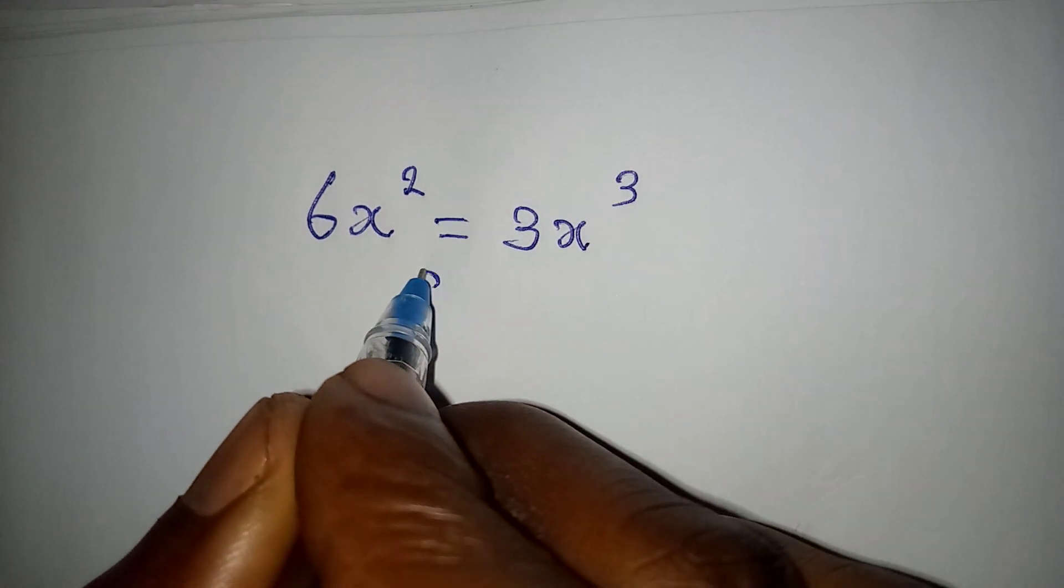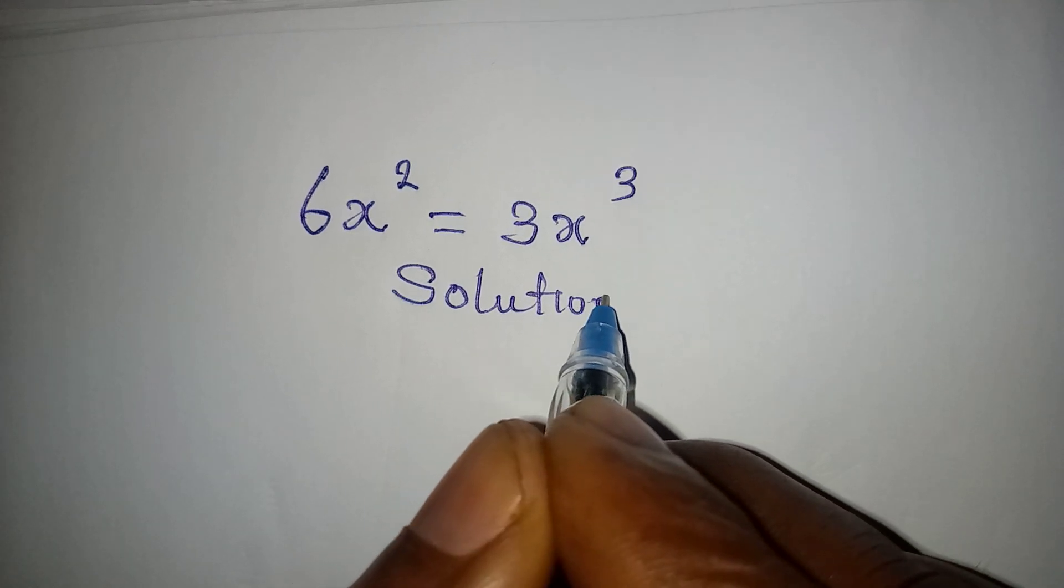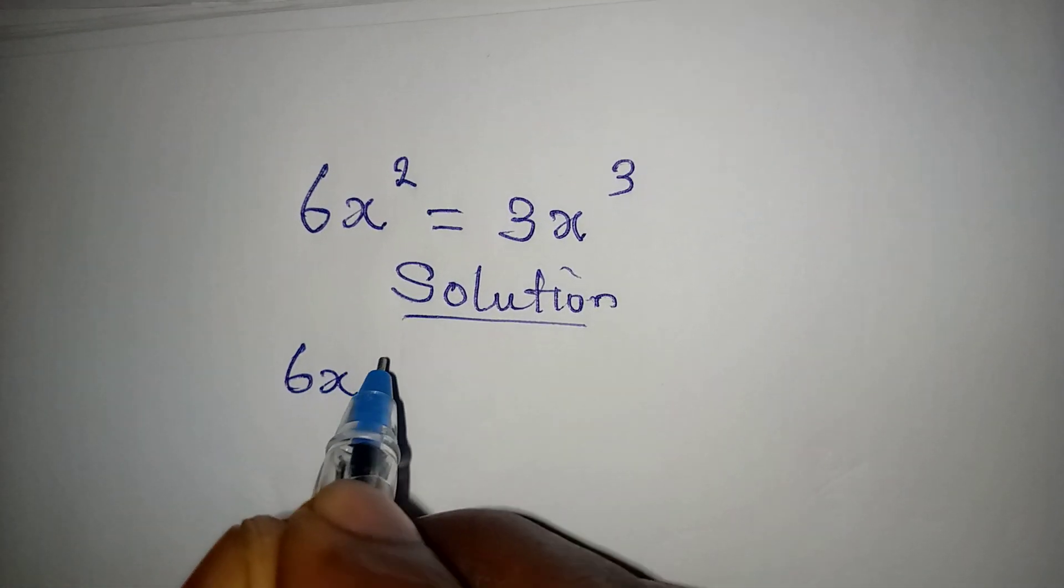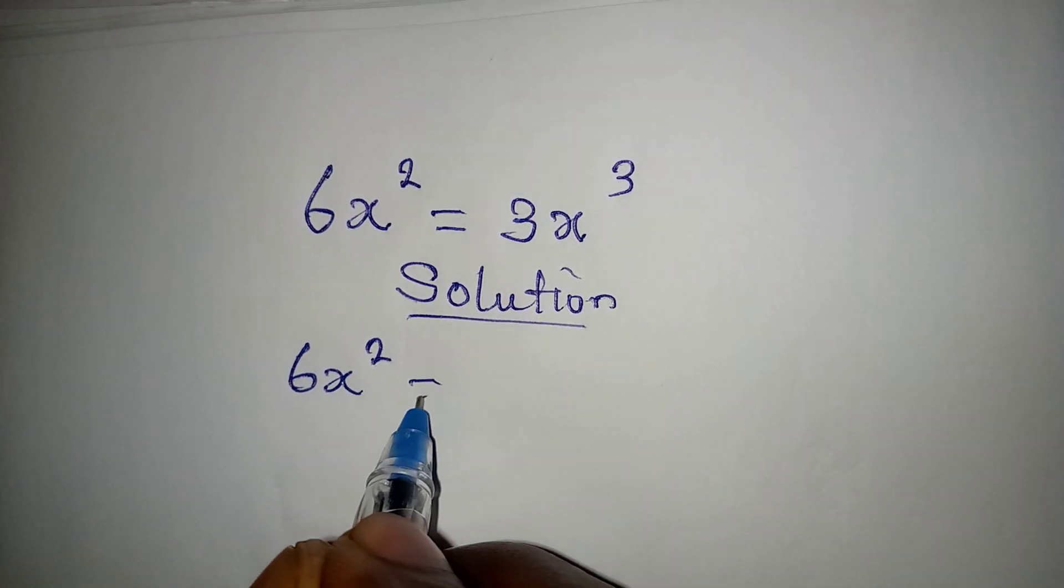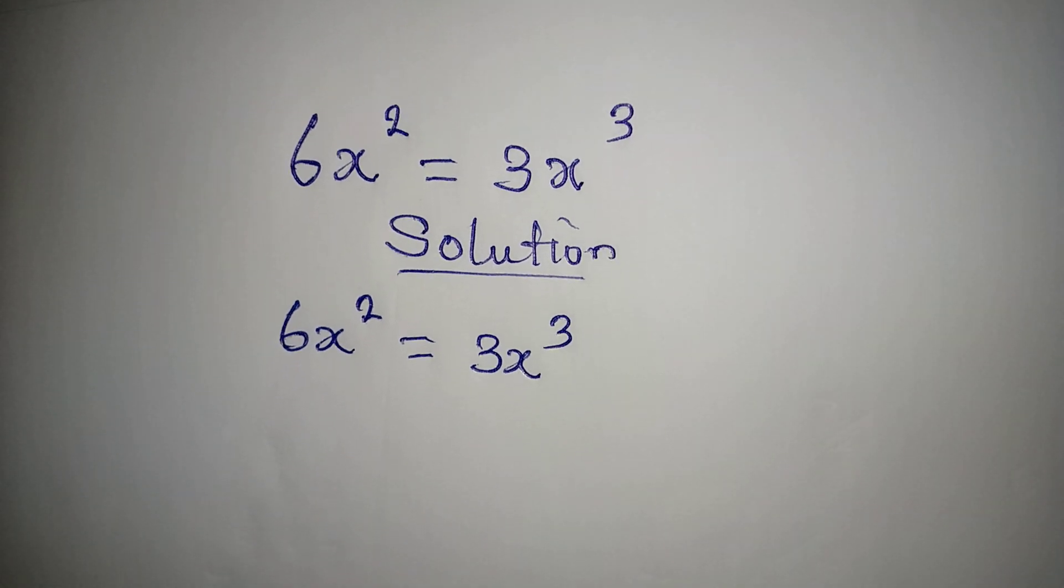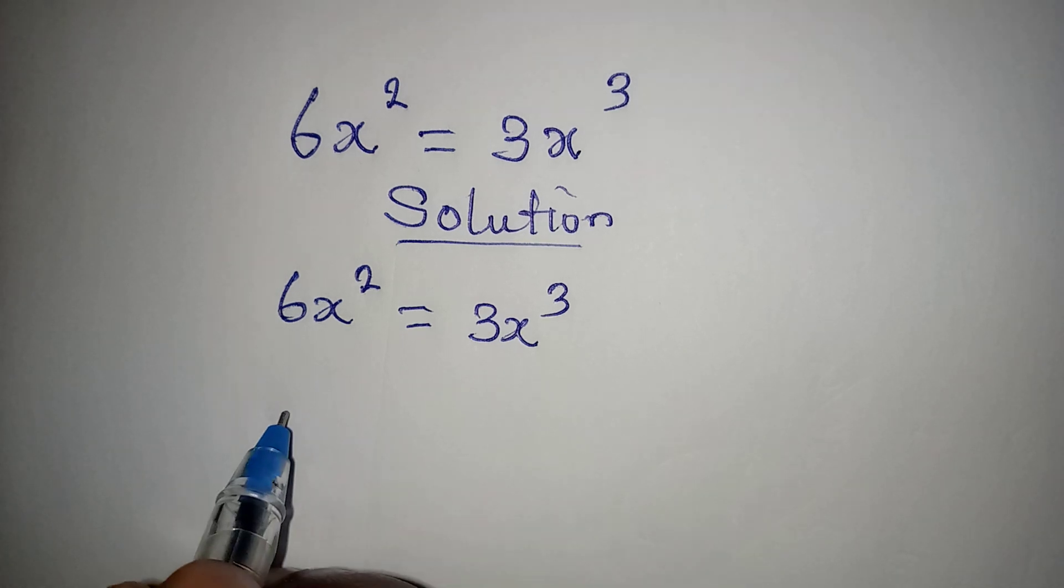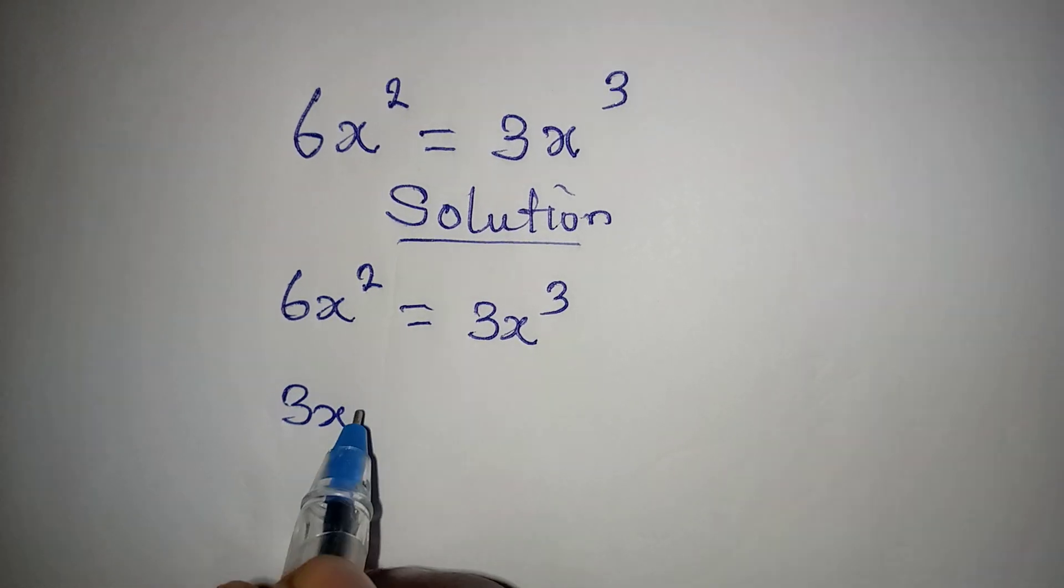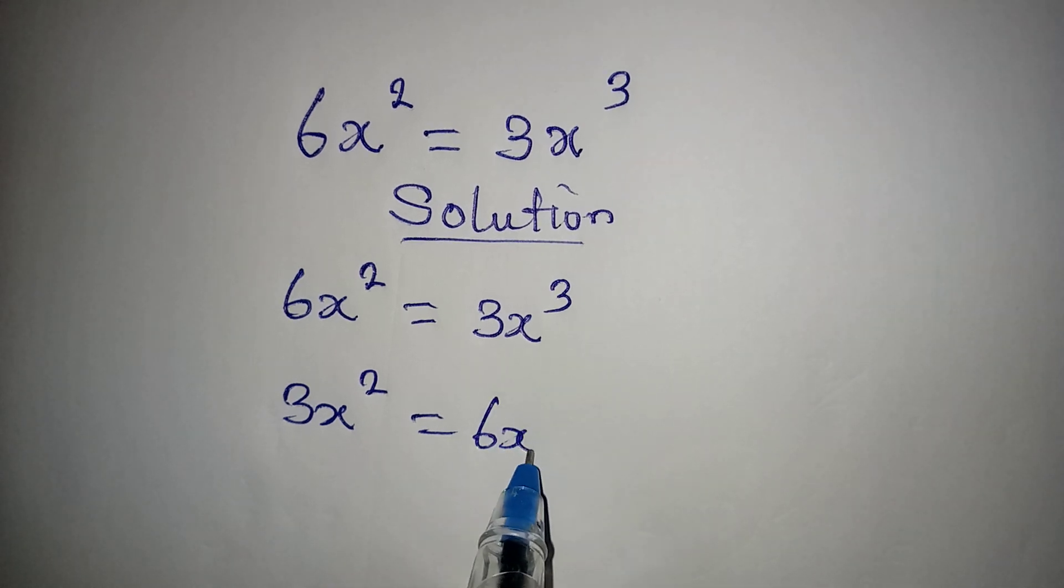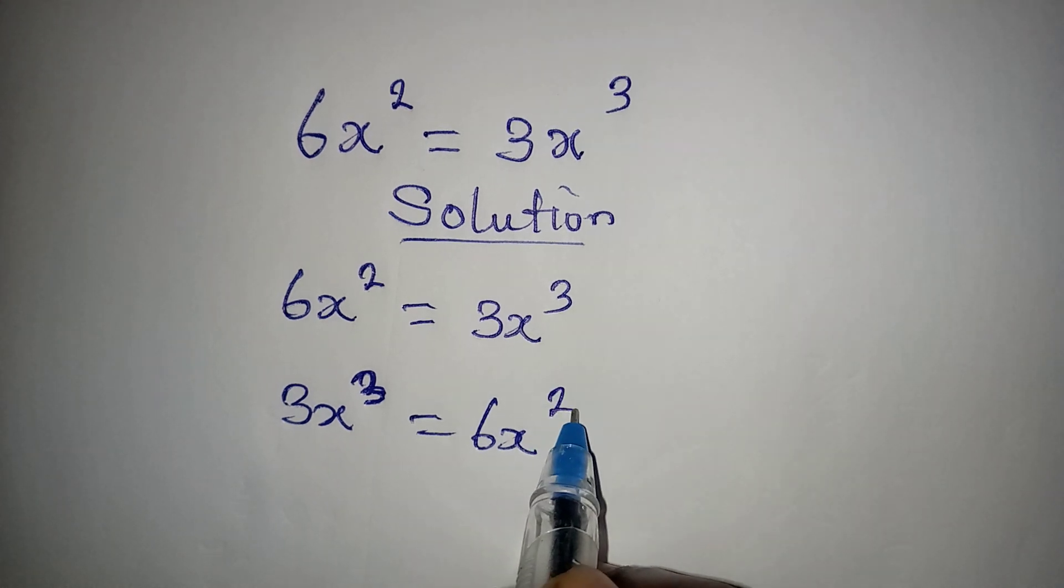Hello everyone, let's provide the solution to this problem: 6x to the power of 2 equals 3x to the power of 3. We can rearrange this so we have 3x to the power of 3 equals 6x to the power of 2.